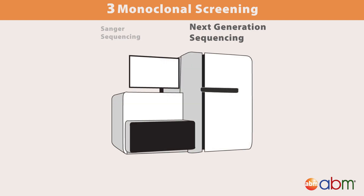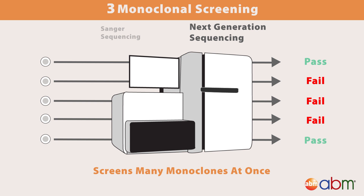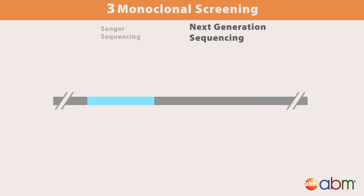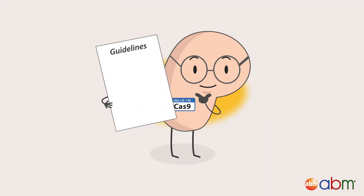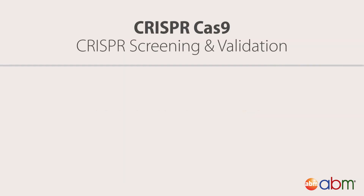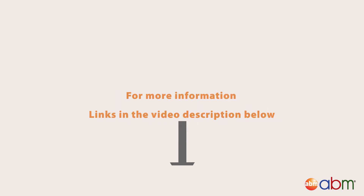Next-generation sequencing can also be used for monoclonal validation. It has the advantage of being able to perform high-throughput screening of many monoclones in parallel. As well, whole genome sequencing is an excellent way to investigate any off-target editing that may have occurred during your CRISPR experiment. After following these guidelines, you should now have a validated knockout cell line. For more information, check out our Knowledge Base article about CRISPR screening and validation.